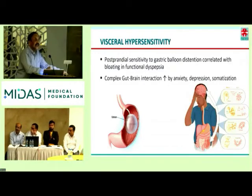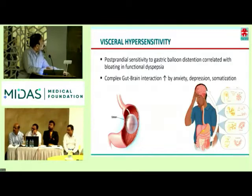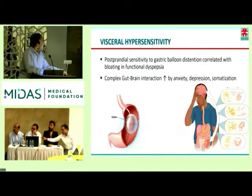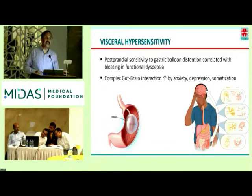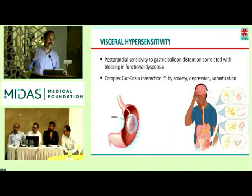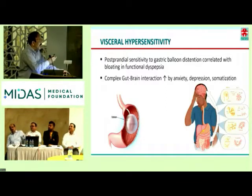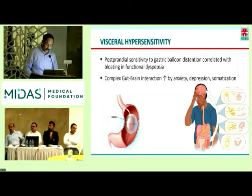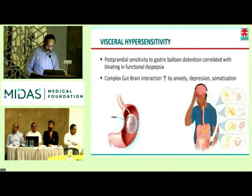Visceral hypersensitivity: experiments with balloon distension have shown increased sensitivity, and there is a complex gut-brain interaction. Initially it was called brain-gut interaction, but now the term is changed to gut-brain, because the gut has importance over the brain. It is increased by anxiety, depression, and somatization.